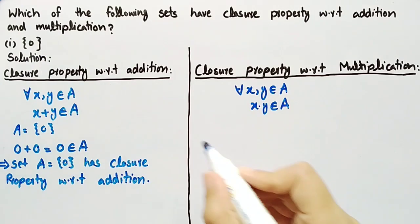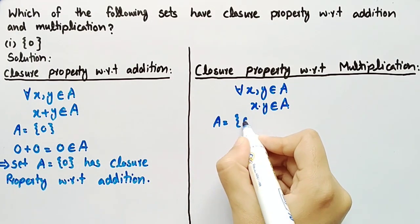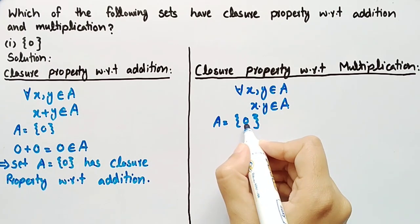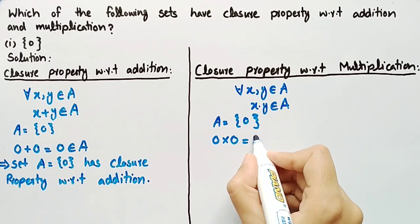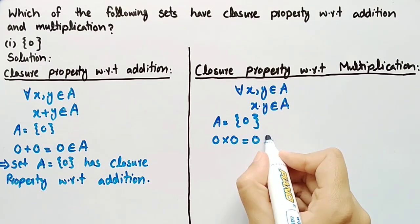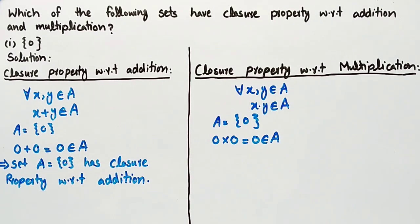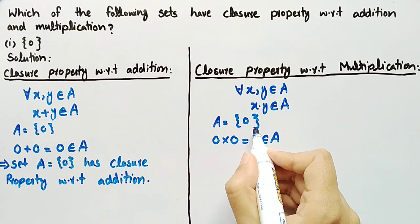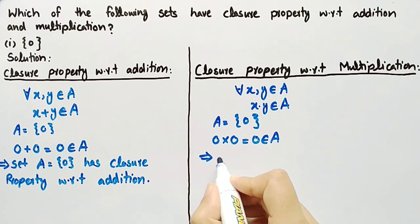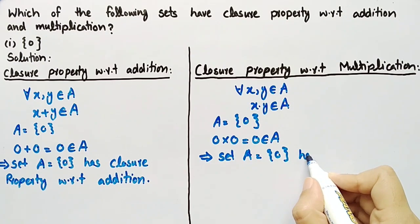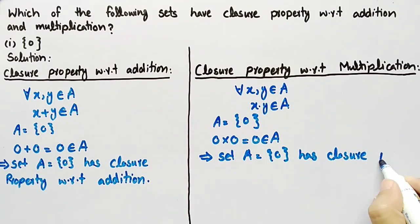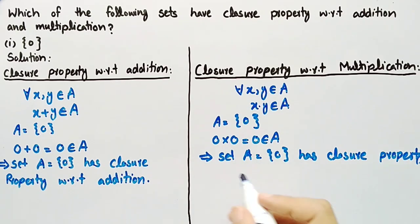Let's name this set as A, so we can write A = {0}. Since there is just one element in this set, we will multiply zero with zero, and zero multiplied by zero is equal to zero. We can clearly see that zero belongs to set A. After multiplying the elements of set A, the answer is also in set A, so closure property with respect to multiplication holds for set A. Therefore, the singleton set A = {0} has closure property with respect to both addition and multiplication.